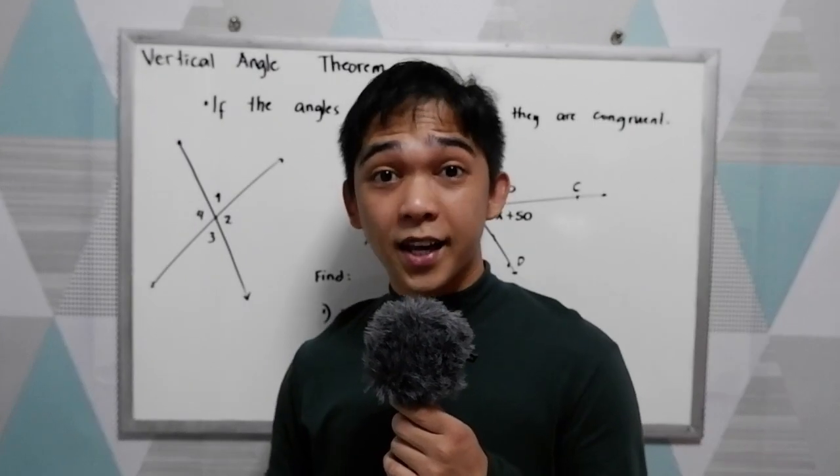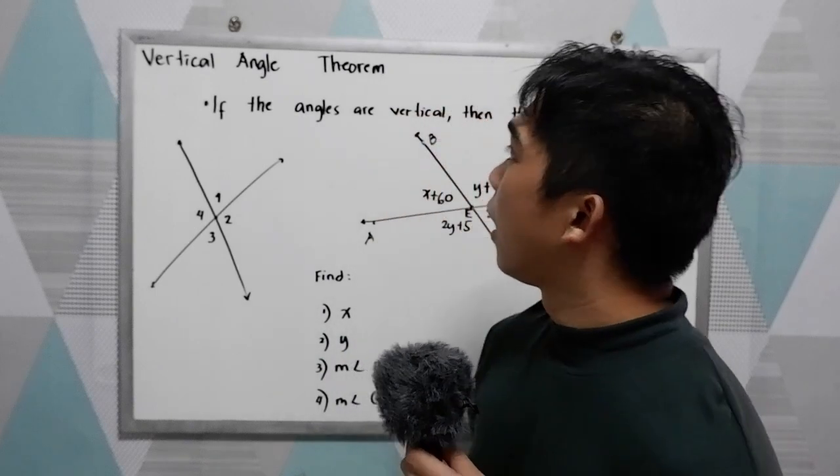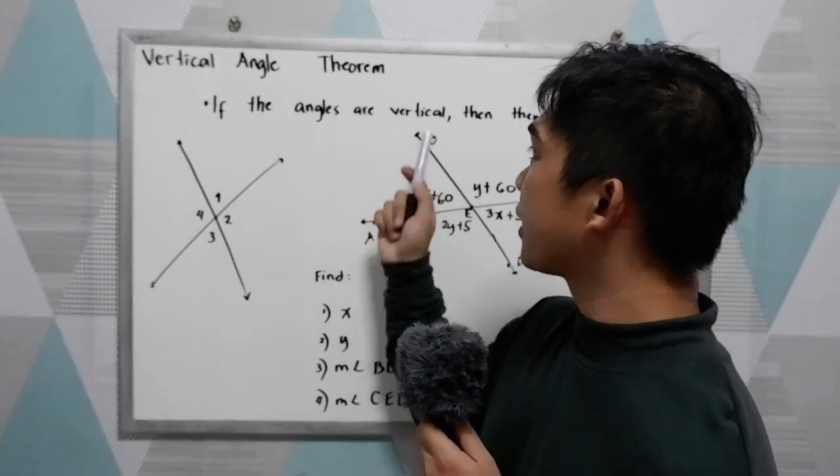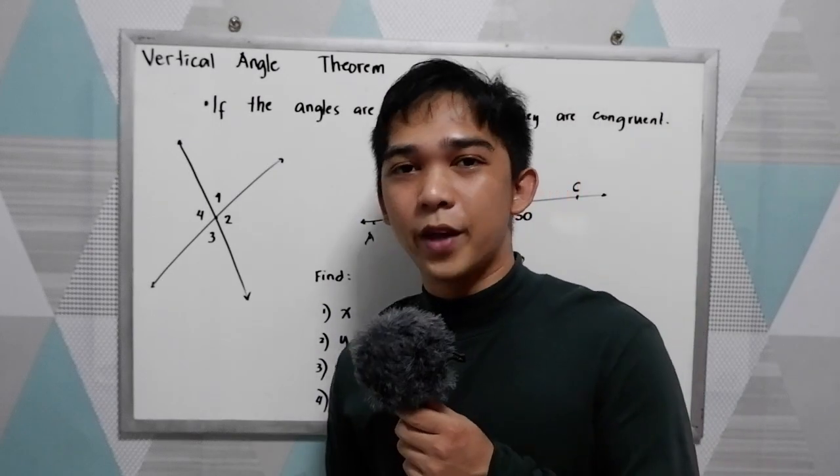Now, let us proceed to vertical angles. Vertical angle theorem: If two angles are vertical, then they are congruent.